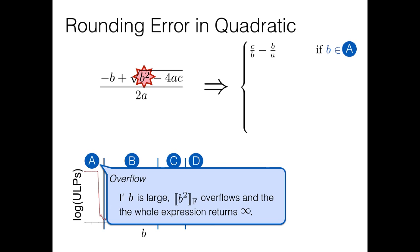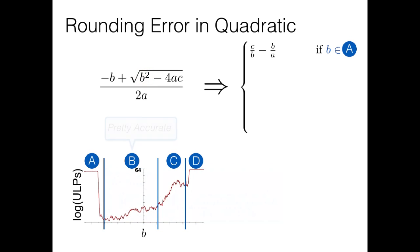The next region is the one I've labeled b, and here actually things are pretty accurate, which is why that red line is so close to the zero. Here, the numerical methods expert might decide that the accuracy of the formula is sufficient, and in this case they can just use the original.